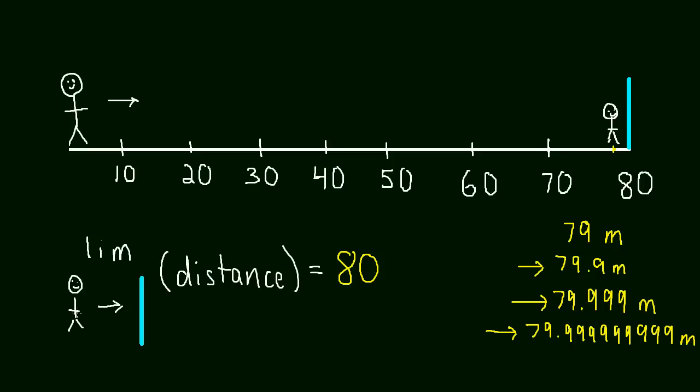We basically pick something that's approaching something else. In this case, we had a guy approaching a wall, getting closer and closer to a wall. Usually, we're going to end up with a variable approaching a number, but for right now, we had a guy approaching a wall. And then we say, if this guy is getting closer and closer to this wall, what is the distance getting closer and closer to? When you can answer that question, that's the answer to your limit. That's what a limit is, essentially.